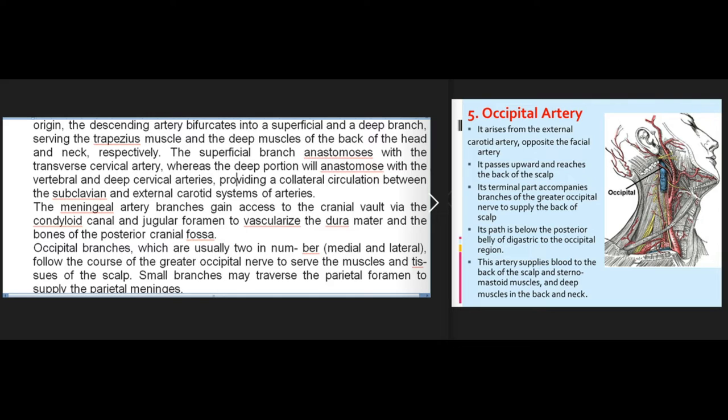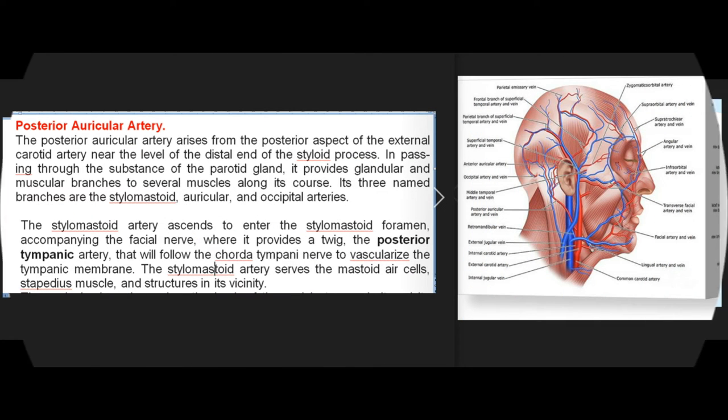The superficial branch of the descending artery anastomoses with the transverse cervical artery, while the deep portion anastomoses with the vertebral and deep cervical arteries, providing collateral circulation between the subclavian and external carotid systems. The meningeal artery branches gain access to the cranial vault via the condyloid canal and jugular foramen to vascularize the dura mater and bones of the posterior cranial fossa. Occipital branches, usually two in number (medial and lateral), follow the greater occipital nerve to serve the muscles and tissues of the scalp.